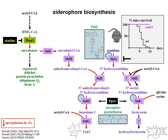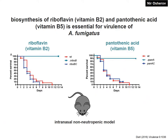Recently we also worked on cofactors of siderophore biosynthesis. SidA requires flavin adenine dinucleotide, which is derived from riboflavin, and sidD and sidC, which are non-ribosomal peptide synthetases, require phosphopantetheine, which is attached by the phosphopantetheine transferase. We found that blocking biosynthesis of either riboflavin or pantothenic acid renders Aspergillus fumigatus avirulent in murine models of aspergillosis. Riboflavin and pantothenic acid are of course not exclusively required for siderophore biosynthesis, but nevertheless these data underline that siderophore biosynthesis is a hub for virulence.